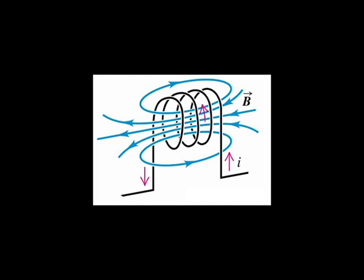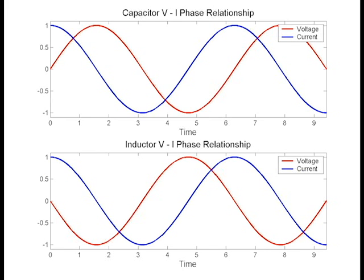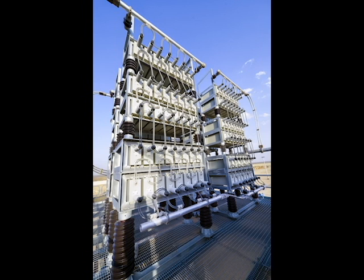Inductors resist change in current, temporarily storing energy in the magnetic field. Capacitors resist change in voltage, temporarily storing energy in the electric field. Together, these can cause phase shifts between the voltage and the current in the line, and can cause an increase in the resistive losses. This is minimized by adding capacitor banks at power substations to adjust the power factor.